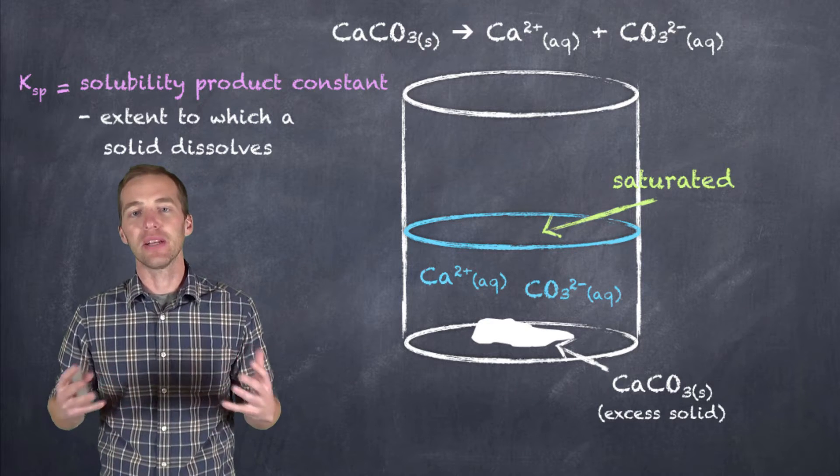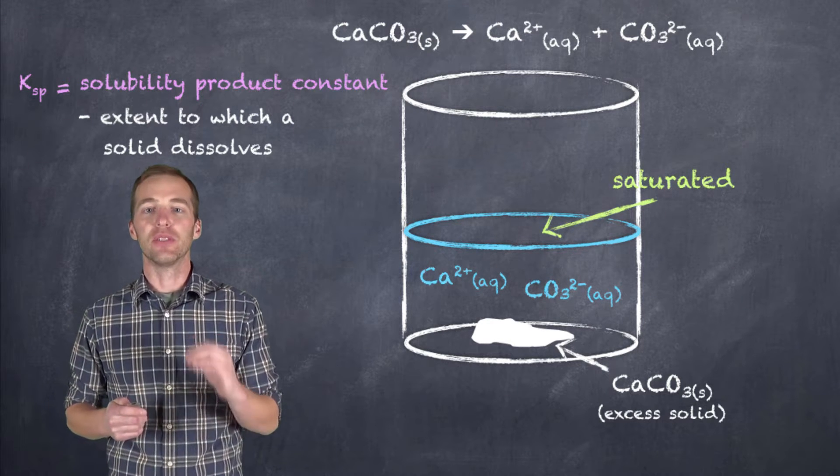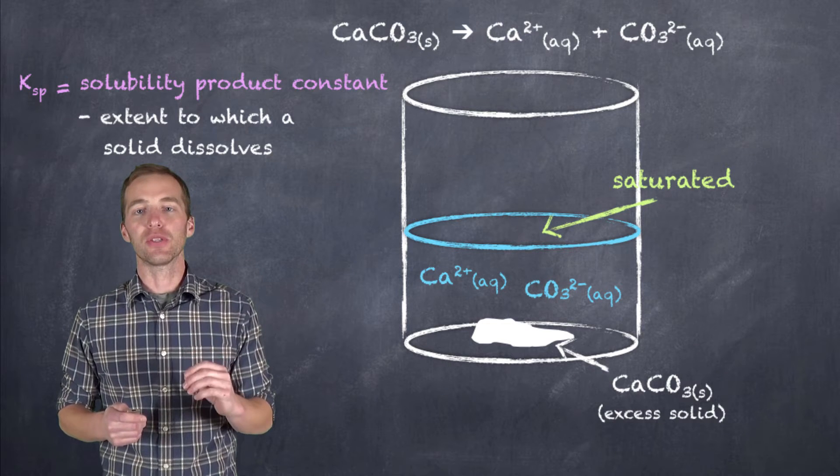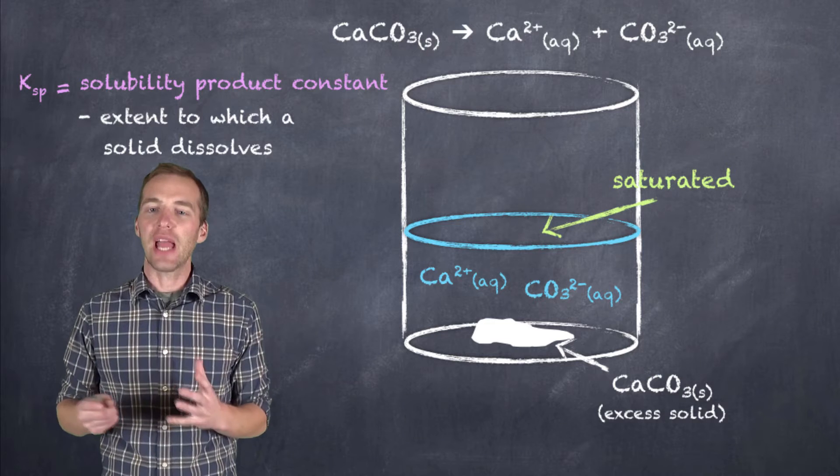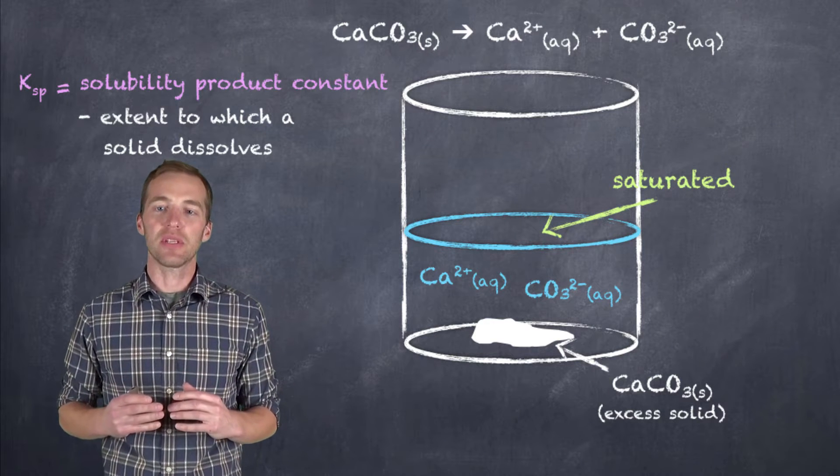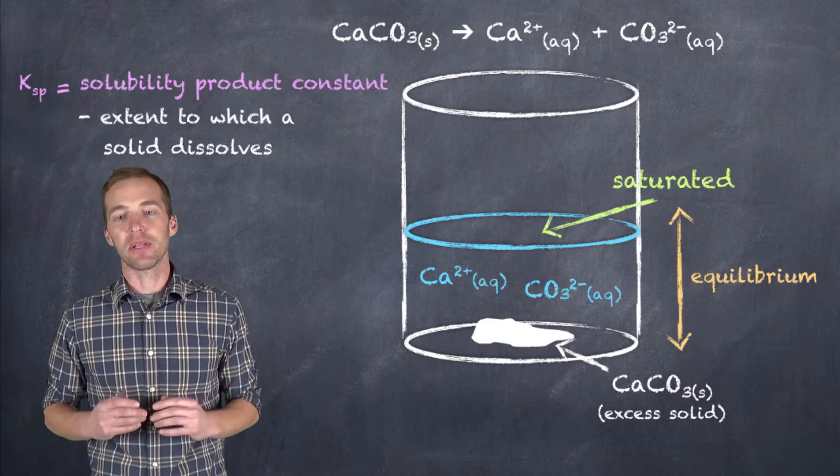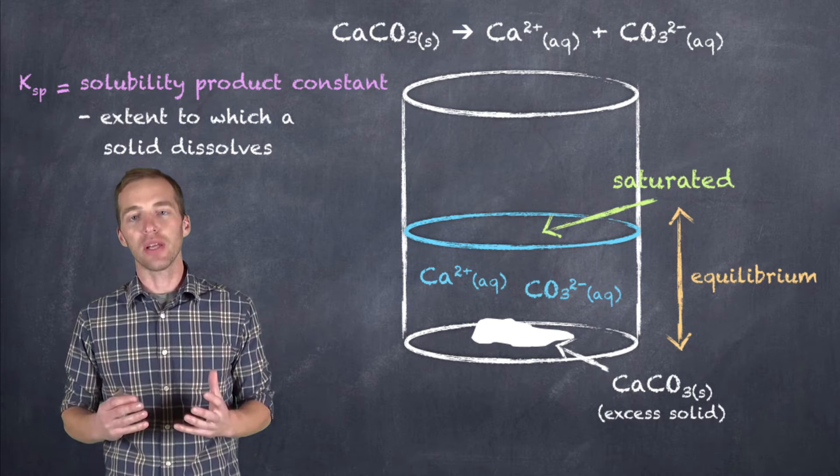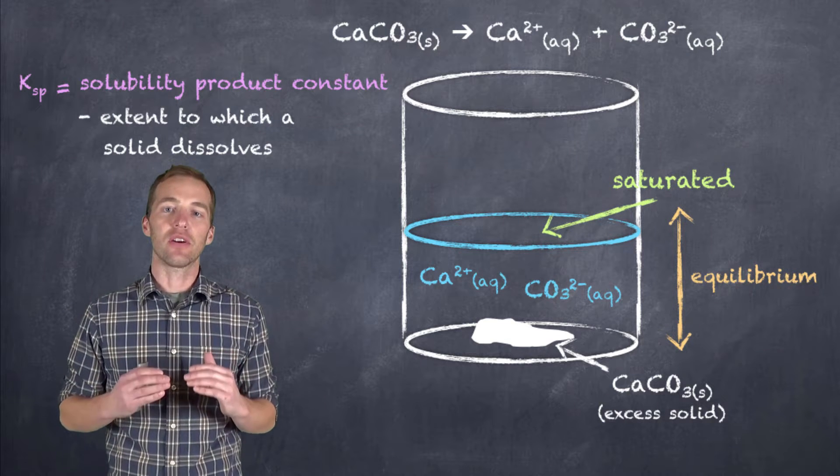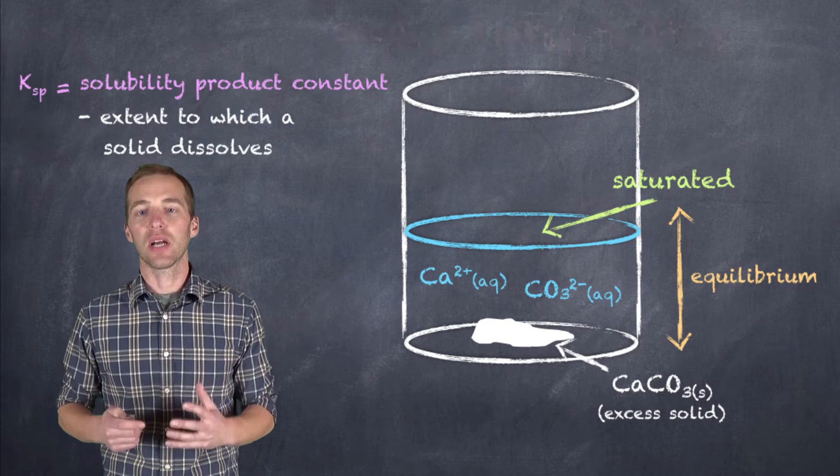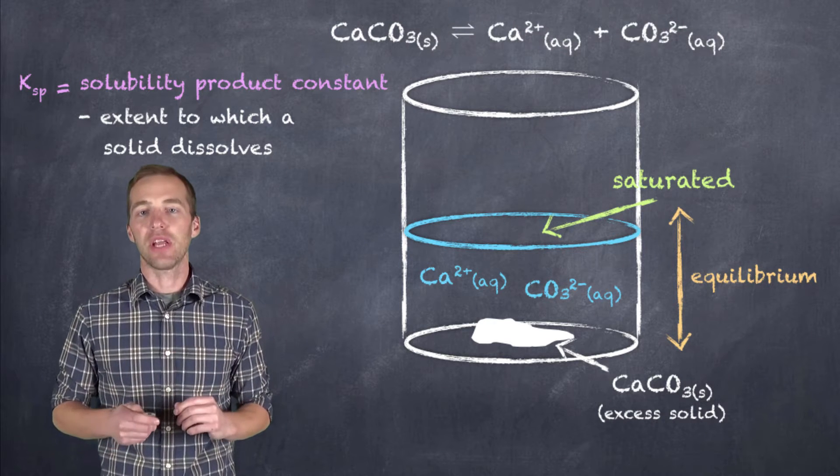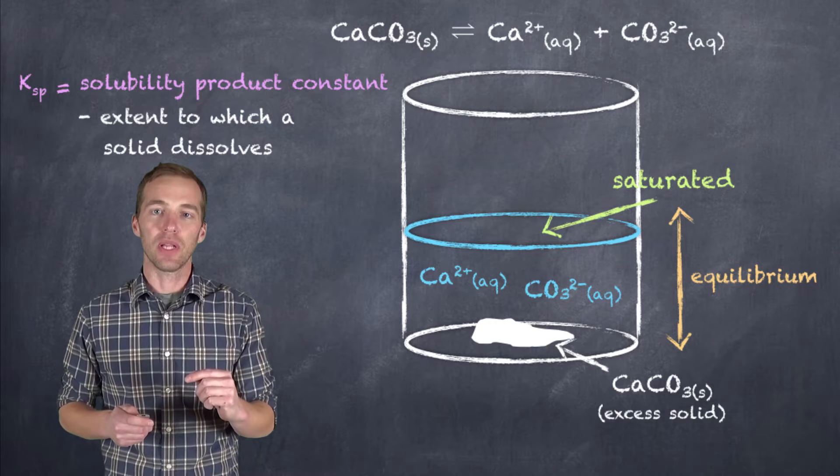So at this point, the calcium carbonate is no longer going to be able to be dissolved. It's no longer going to be soluble in the water. At least it's not going to appear that way. What's actually happening is once we start to see a precipitate form, there is an equilibrium that's established between the solid and the ions that are saturated in this solution. And this is where our equilibrium constant comes in, because now we have a scenario where we have something in equilibrium.